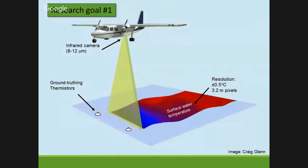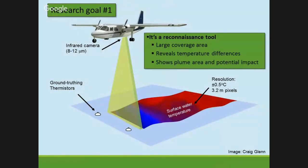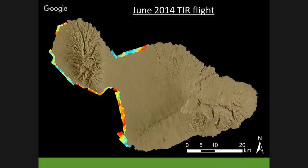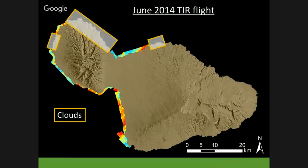We used a thermal infrared camera located in a plane and flew around the entire coast of Maui. The benefit is large coverage area — it shows the temperature difference, revealing plume areas where colder groundwater discharges into the coast and giving areas of potential impact. We flew around in the middle of the night. This was our result — we did encounter some clouds, since infrared cannot see through clouds, but it gave us a great regional-scale map. This was done in 2014.